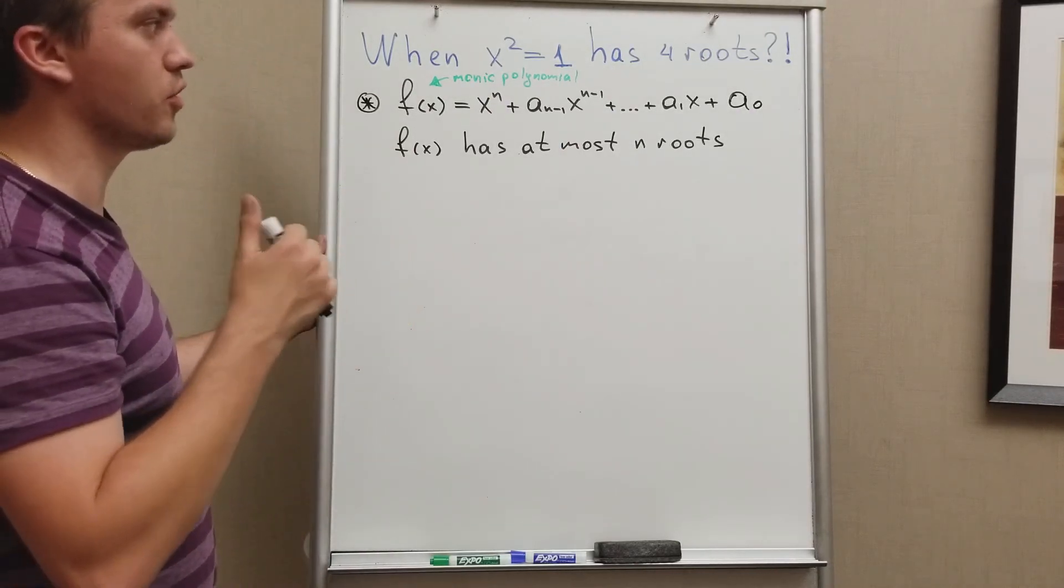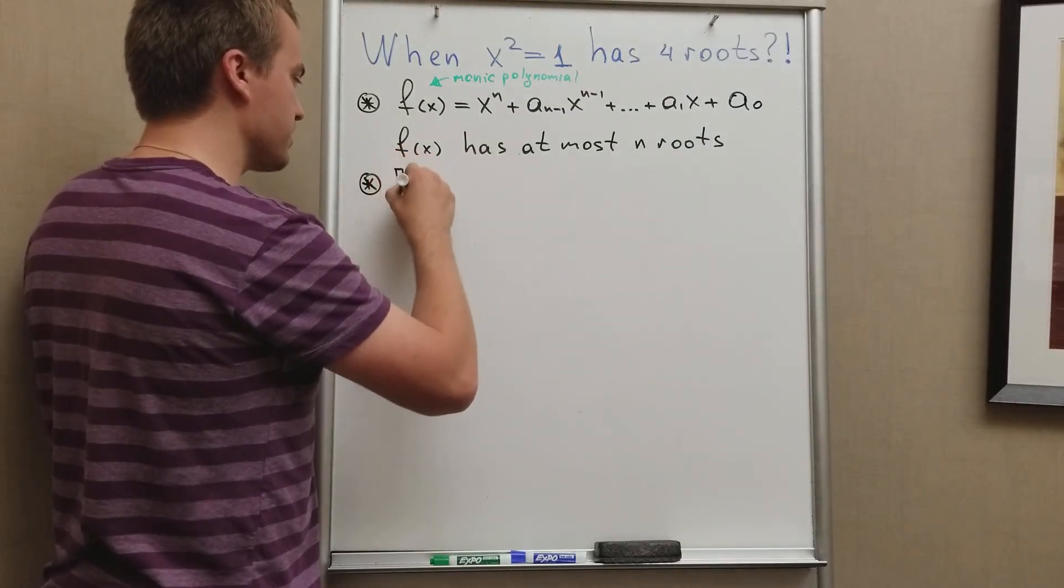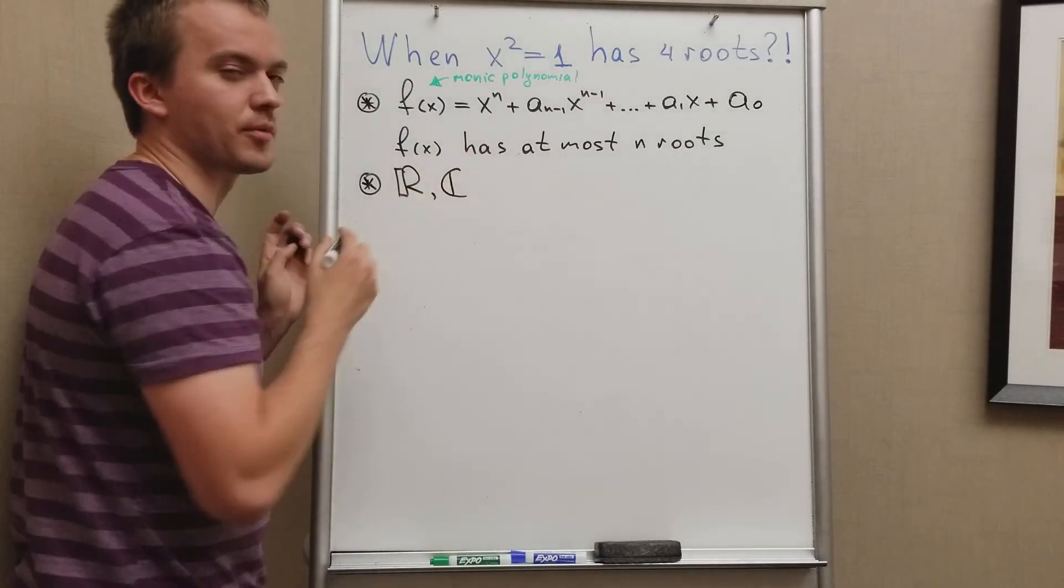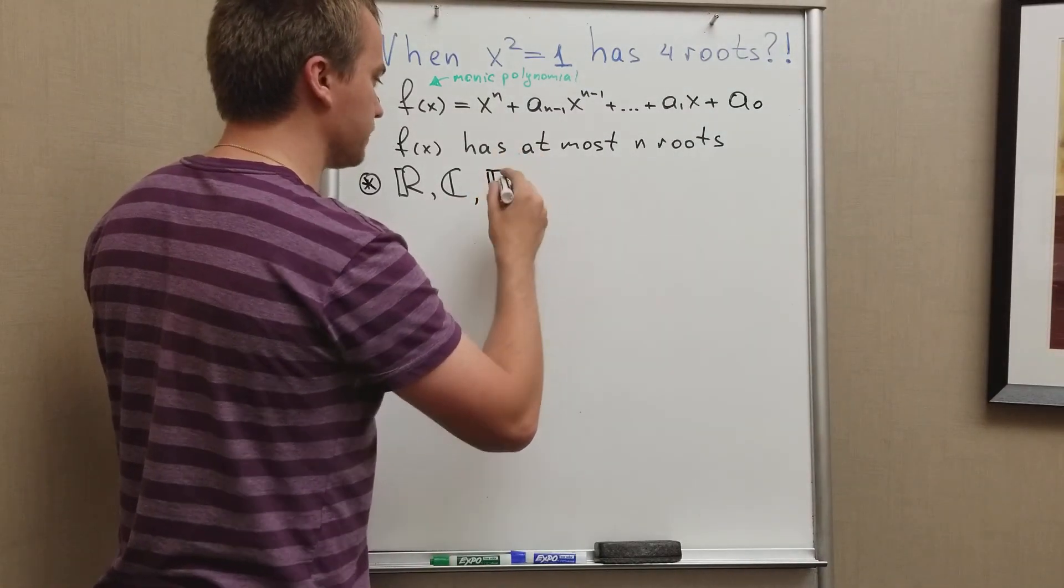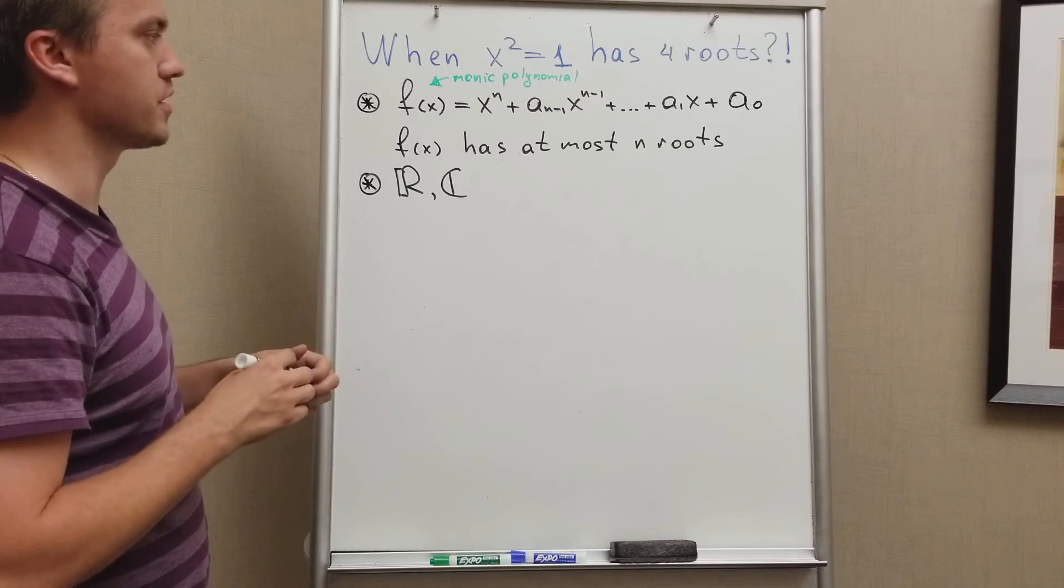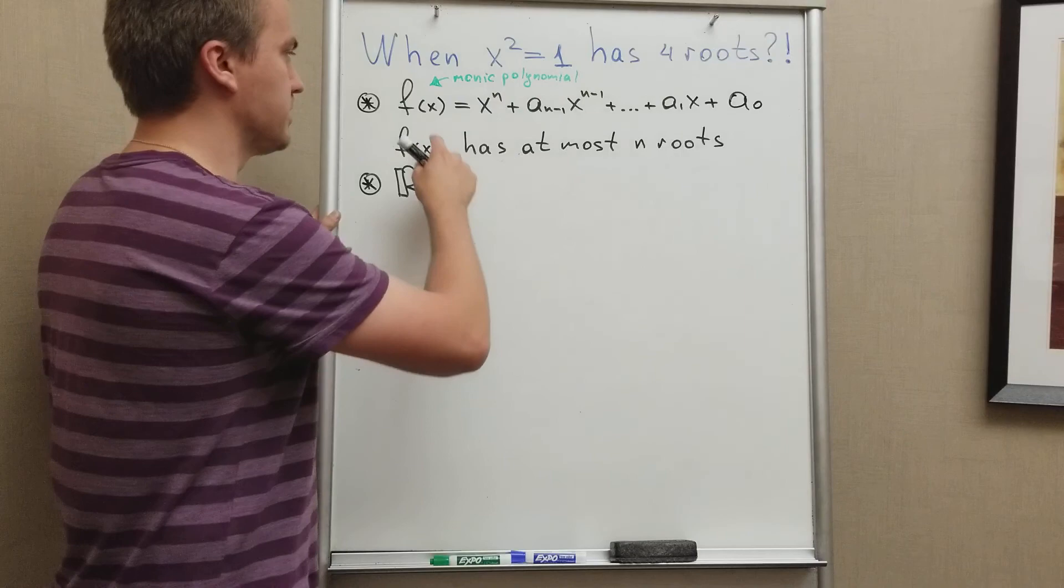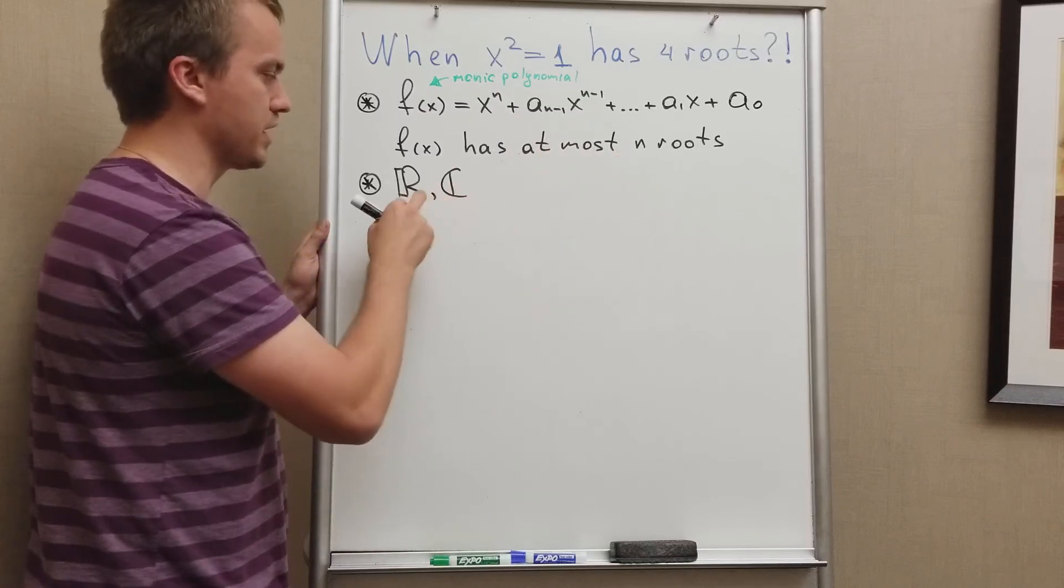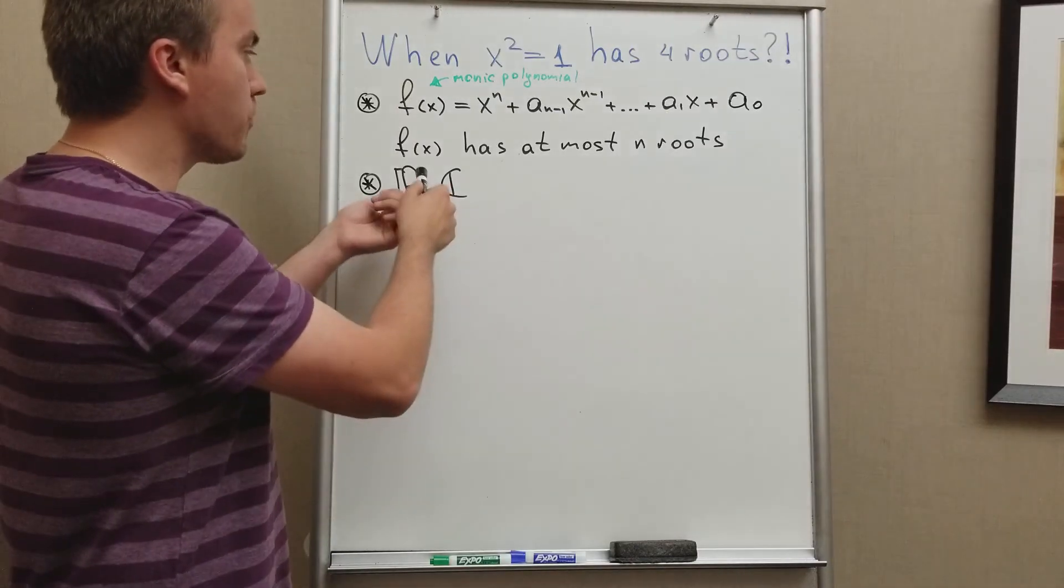What is a field, I may discuss in the next video, but basically examples of fields are real numbers, complex numbers. Over complex numbers, by using the fundamental theorem of algebra, this polynomial is going to have exactly n roots. But over reals it's going to have at most n roots because some polynomials are not going to split. So over a field this is true.